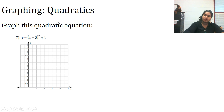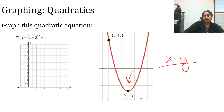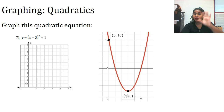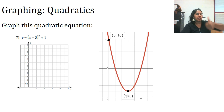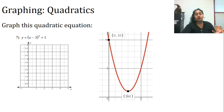I should have created an x-y t-chart and gone from there. We got a couple of points right — we understood there was a point at (0, 10) and that it was a positive upward-facing quadratic. We were just a little shifted off, which would have been fixed by plotting some real points.